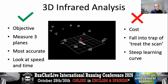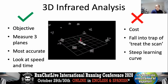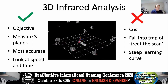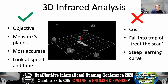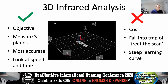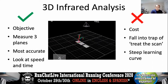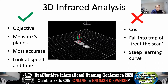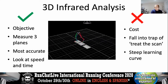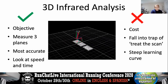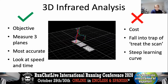Moving on to 3D infrared analysis — using cameras. The Run 3D setup in clinic is a three-camera system, but labs can have twelve or more.